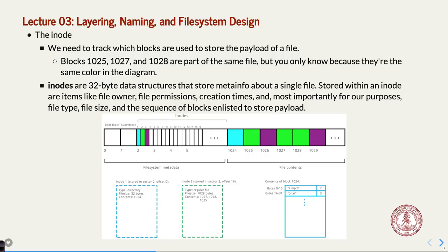The inodes themselves go into blocks. You can fit 16 inodes — each 32 bytes — in one 512-byte sector or block. That's 16 × 32 = 512. Each inode refers to a particular file or directory on the disk. When I say directory, a directory is a file — it's just a special type of file. You'll see what that means when we do the examples.